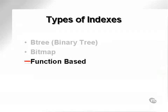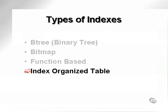A function-based index is an index made from a function. You apply a function to a variable value, such as a column in a table, and the result of the function becomes the index. An index-organized table is one of those things that is not necessarily just an index, but an object — it's actually a table as well.